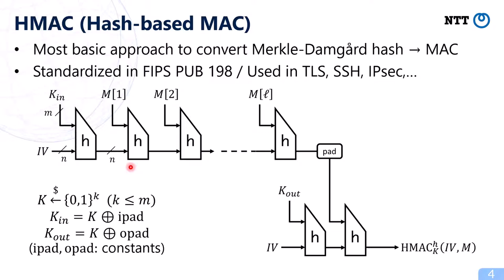HMAC, or hash-based MAC, is the most basic approach to convert a Merkle-Damgård hash function into a MAC. It is standardized in FIPS and used in many applications such as TLS, SSH, and IPSec. In HMAC, a secret key K is chosen uniformly at random, and two keys KIN and KOUT are computed using fixed constants IPAD and OPAD. For each input M, the message is concatenated with KIN and processed with the Merkle-Damgård hash function, and this output is concatenated with KOUT and again processed with the hash function. So for each message, the Merkle-Damgård hash function is evaluated twice.